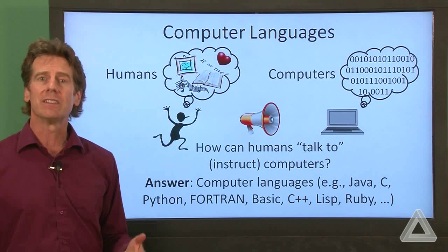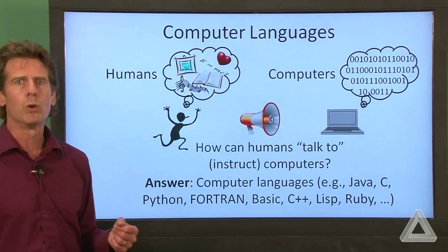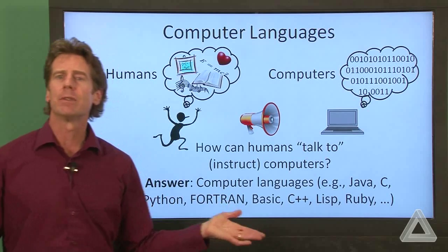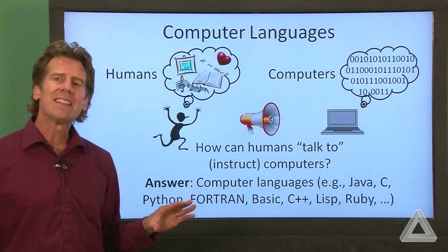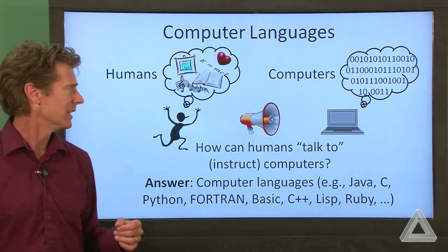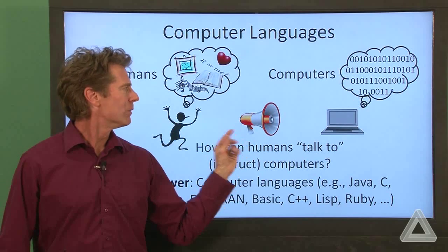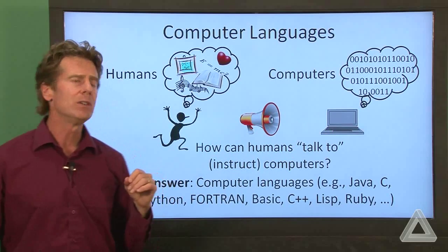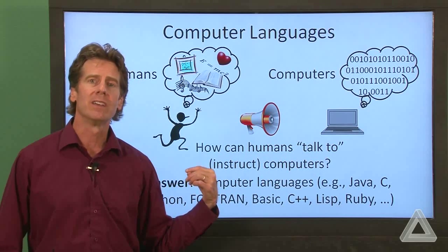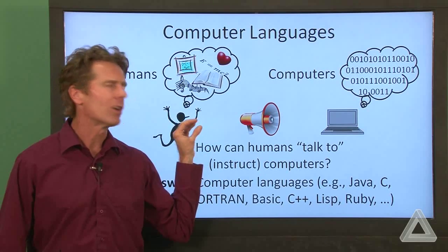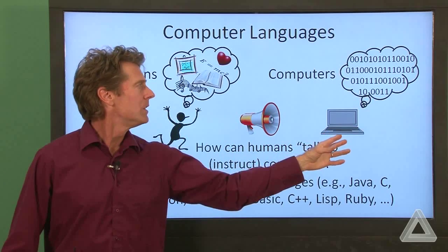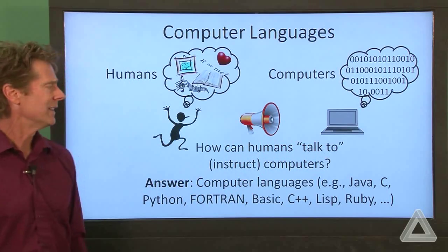So there are literally thousands of different computer languages. Some of them more widely known ones are Java, C, Python, Fortran, Basic, C++, Lisp, Ruby, and so on. And all of these languages have different strengths and weaknesses. Python is a wonderful general purpose language that we'll be using in this class. And note that I have the megaphone sort of pointing from the human toward the computer. And that's because we really give instructions to the computer and then we tell it how to talk back to us. So our computer language is mostly designed for allowing us to express ourselves in a way that's kind of natural to us to get to a point where the computer can understand it in terms of ones and zeros.